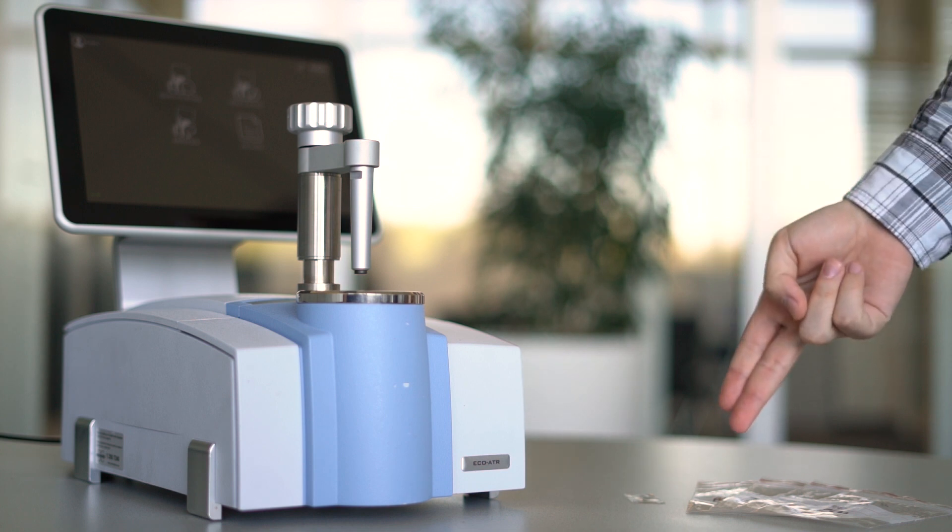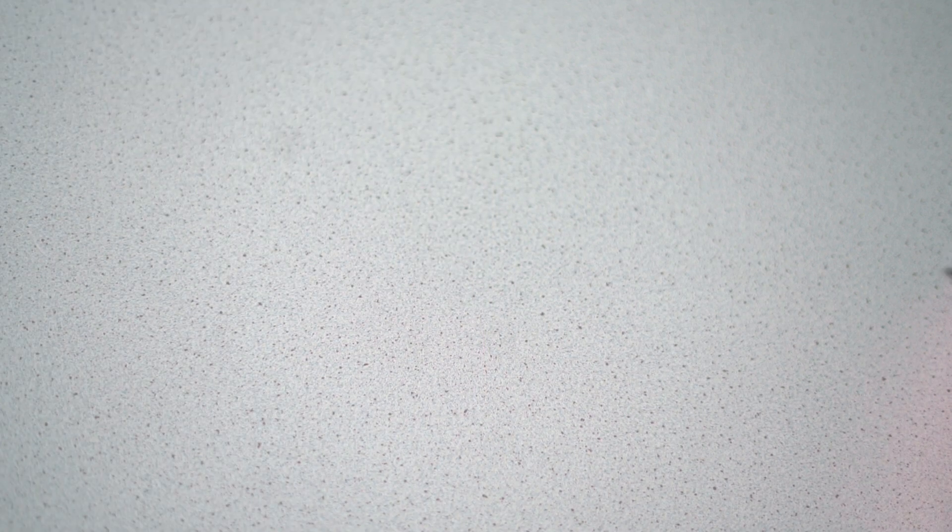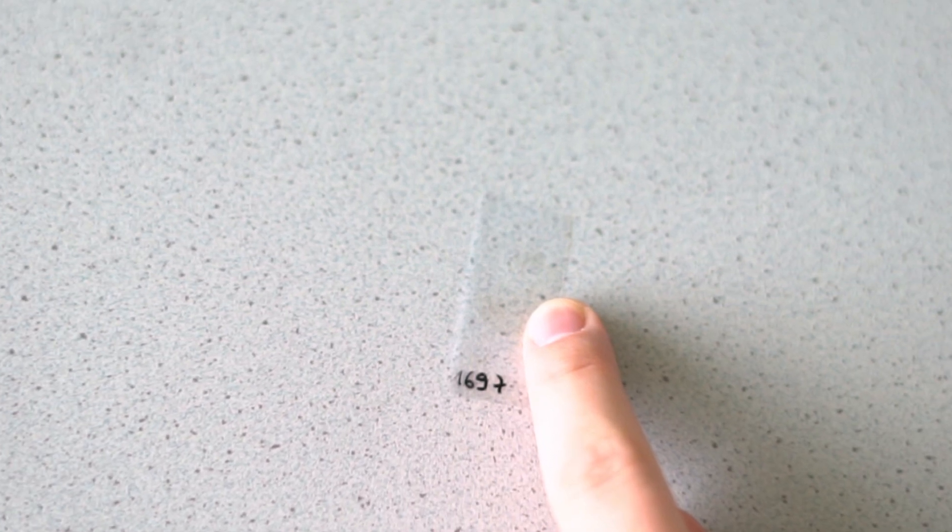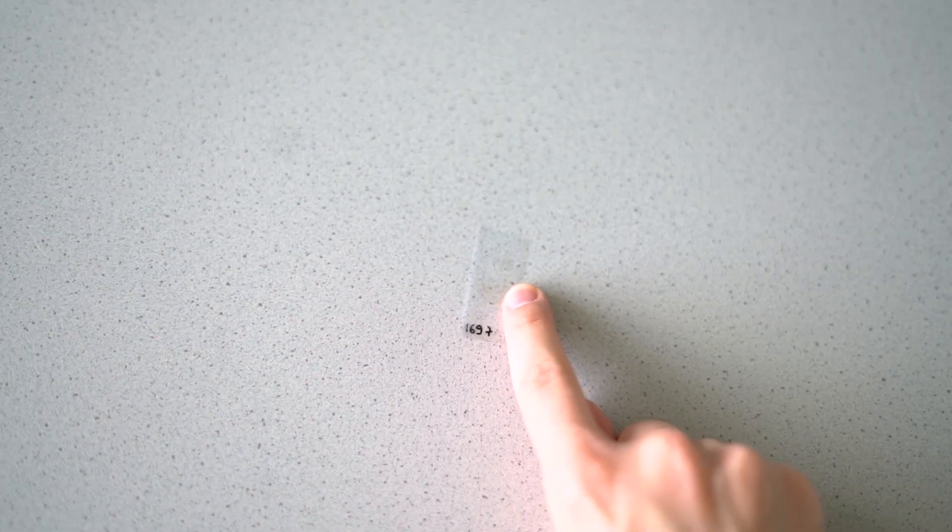Foils and films can be analyzed without any prior sample preparation. Let me show you how it's done with these snippets of a coated polymer film using FTIR spectroscopy and the Alpha 2.